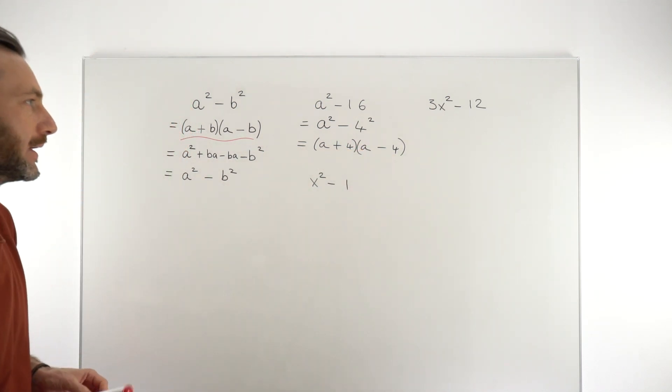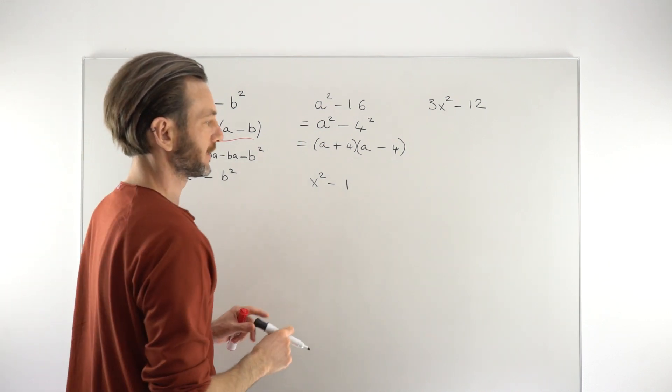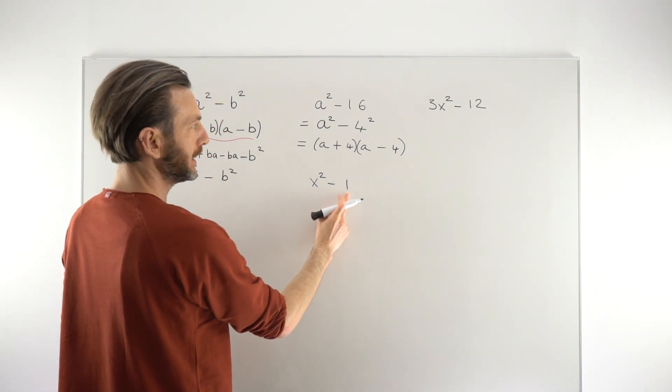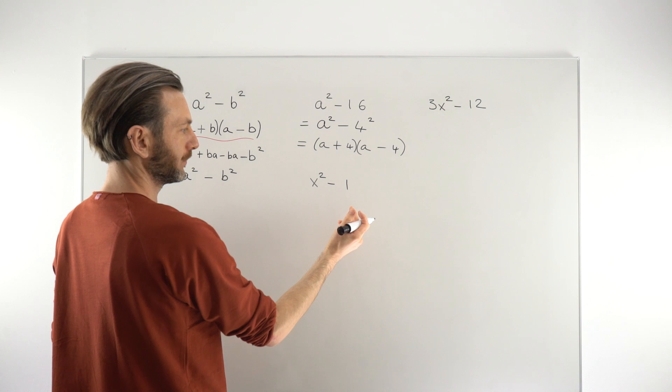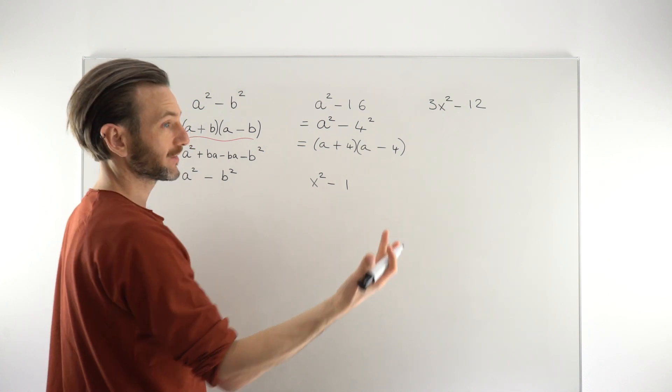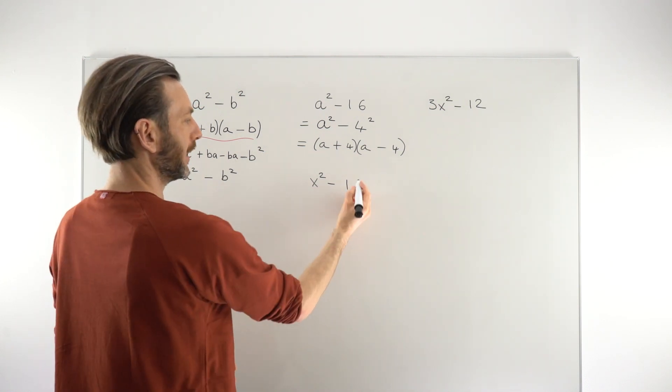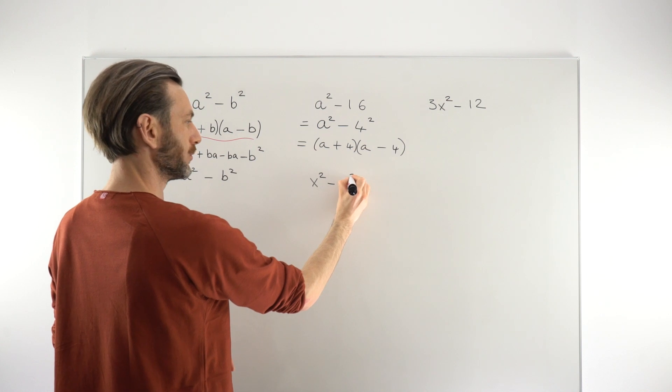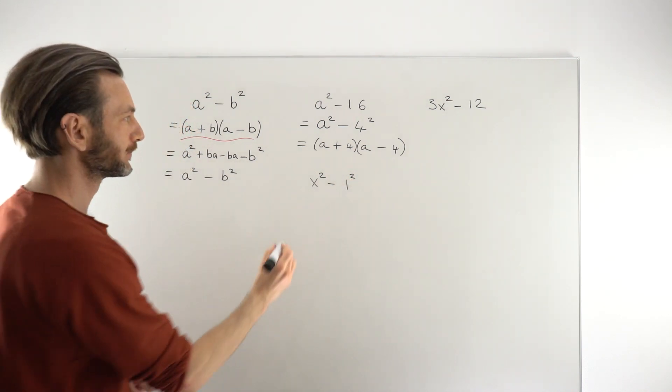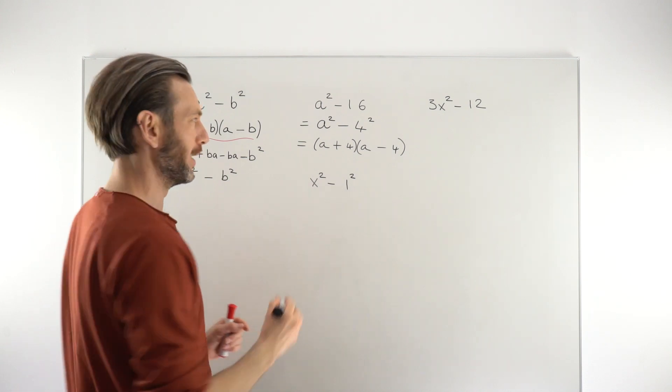This one, x²-1. This is kind of a special case in a way because 1 doesn't appear to have a square root. Well, it's certainly not a number squared, but 1 is 1². So that is actually already in the format of a², just in a secret format.